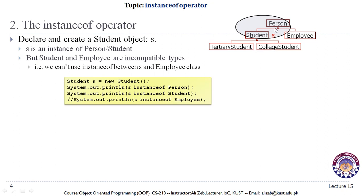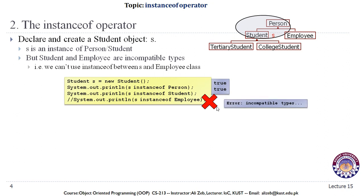There is a relationship between the Student class and the Person class, but there is no horizontal relationship between Student and Employee. So the first two statements comparing s with Person and Student return true, but the third comparison — s instanceof Employee — will not execute; it generates a compiler error because Student and Employee are incompatible with each other.